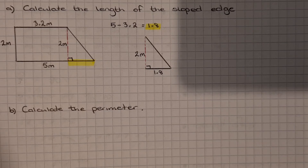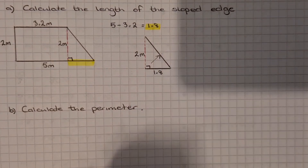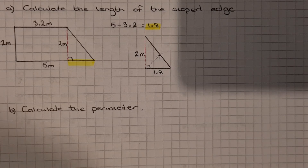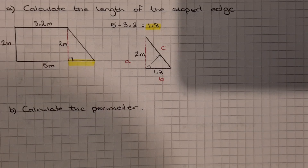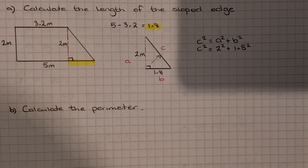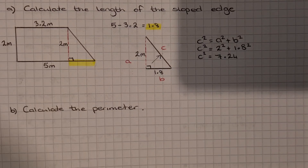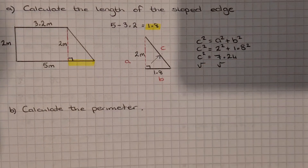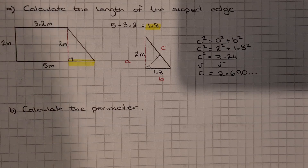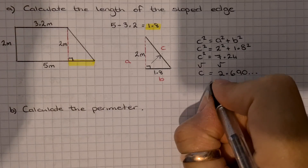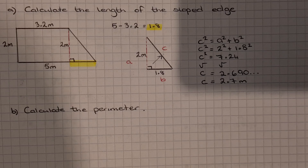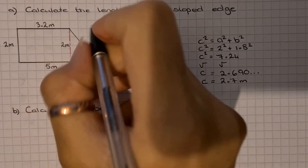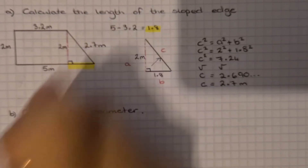We're trying to find the longest side, the hypotenuse. So we label all the sides and write down Pythagoras theorem — the normal version since it's the longest side we're finding. Putting in the numbers and typing into the calculator: c² = 1.8² + 2² = 7.24. We then square root both sides to get 2.690..., rounding to one decimal place gives c = 2.7 metres. So the sloped edge is 2.7 metres.